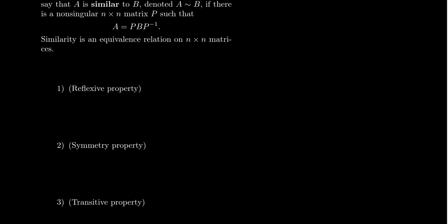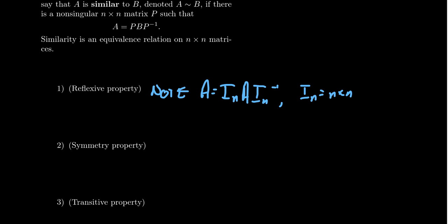Just take an arbitrary element and show why it's equivalent to itself. Note that A is equal to I_n A I_n inverse, where I_n is equal to the n by n identity matrix. So this is the matrix with ones along the diagonal and zero everywhere else. The identity matrix has the property that if you take any matrix A and multiply it by the identity, this is equal to A.